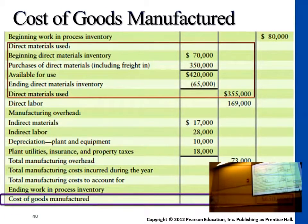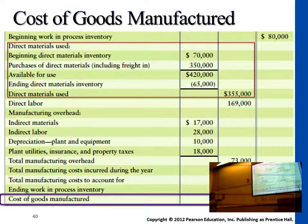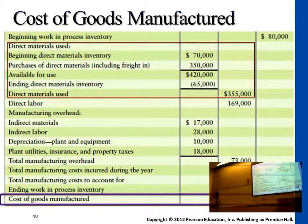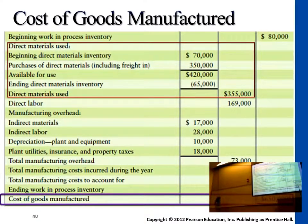In the first section — direct materials — we want to know the value of the direct materials we've used at year end. To calculate that $355,000 at the end, we need to trace back to last year's statement. Do we have direct materials left over from last year? Yes, we have $70,000 in direct materials left from last year, and we can still use them this year.